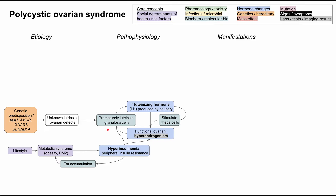These are some of the common genes that have been found in studies: AMH, AMHR, GNAS1, DENNDA, and D1A. Those are some of the genes that come up in the most recent studies of the etiology of PCOS. Of course, there is also a genetic predisposition to metabolic syndrome as well.